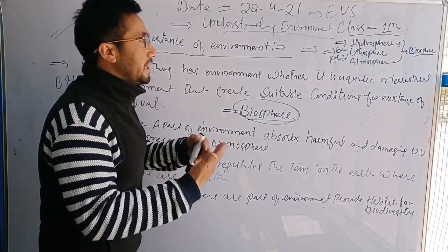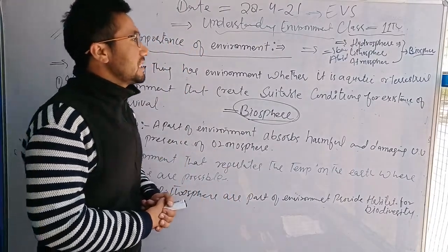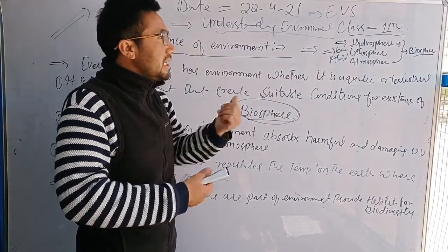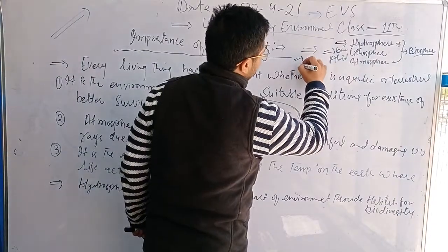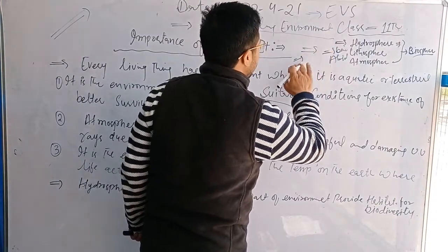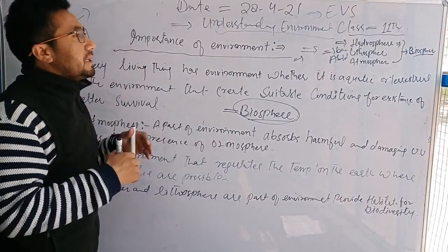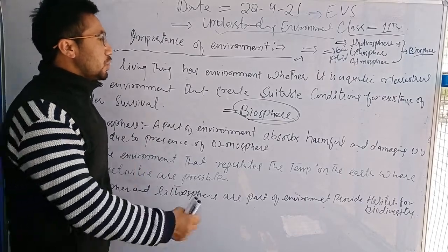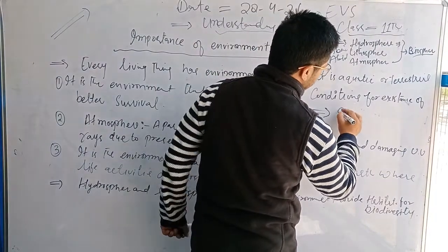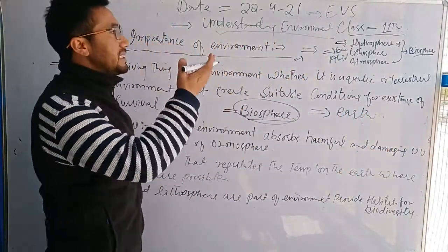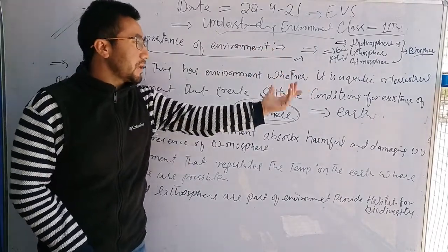We can say that there are specific combinations of gases and water that support life. All of this is not possible on every planet. This is why the existence of life is not possible everywhere. Earth is a planet where we have all the necessary components.